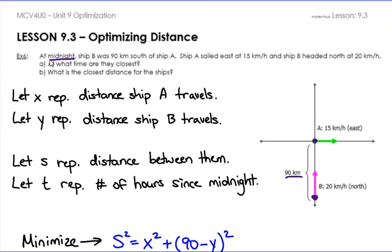Ship A sailed east at 15 kilometers per hour, so we have a vector going east. Ship B headed north at 20 kilometers per hour. The question asks at what time were they closest? Closest means some sort of minimization — minimizing the distance between them — so that's what we're looking for.